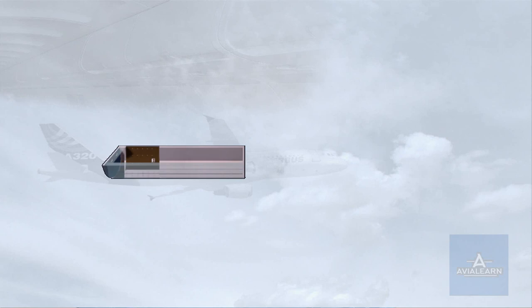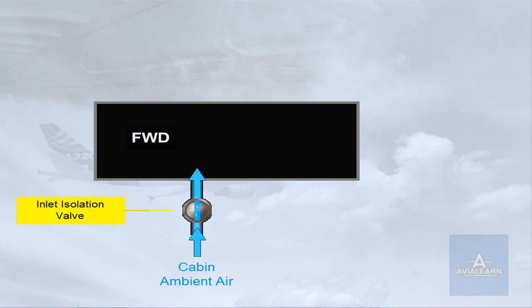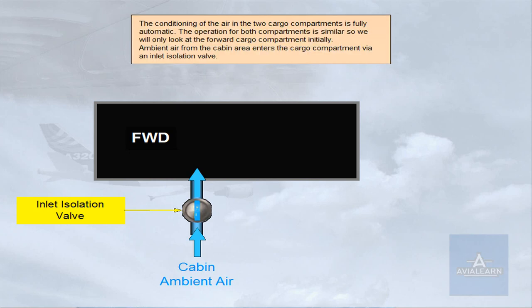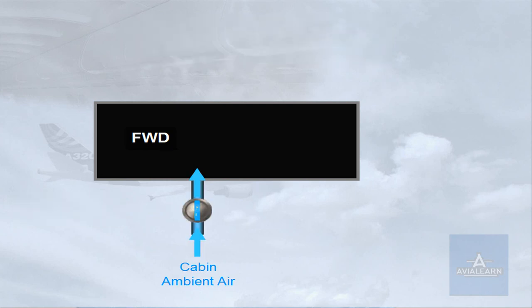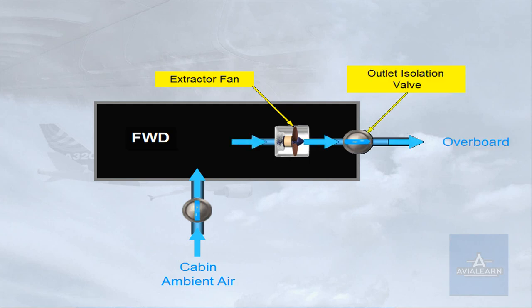The conditioning of the air in the two cargo compartments is fully automatic. The operation for both compartments is similar, so we will only look at the forward cargo compartment initially. Ambient air from the cabin area enters the cargo compartment via an inlet isolation valve. The air is removed from the compartment either by an extractor fan or by differential pressure, and is discharged overboard via an outlet isolation valve.